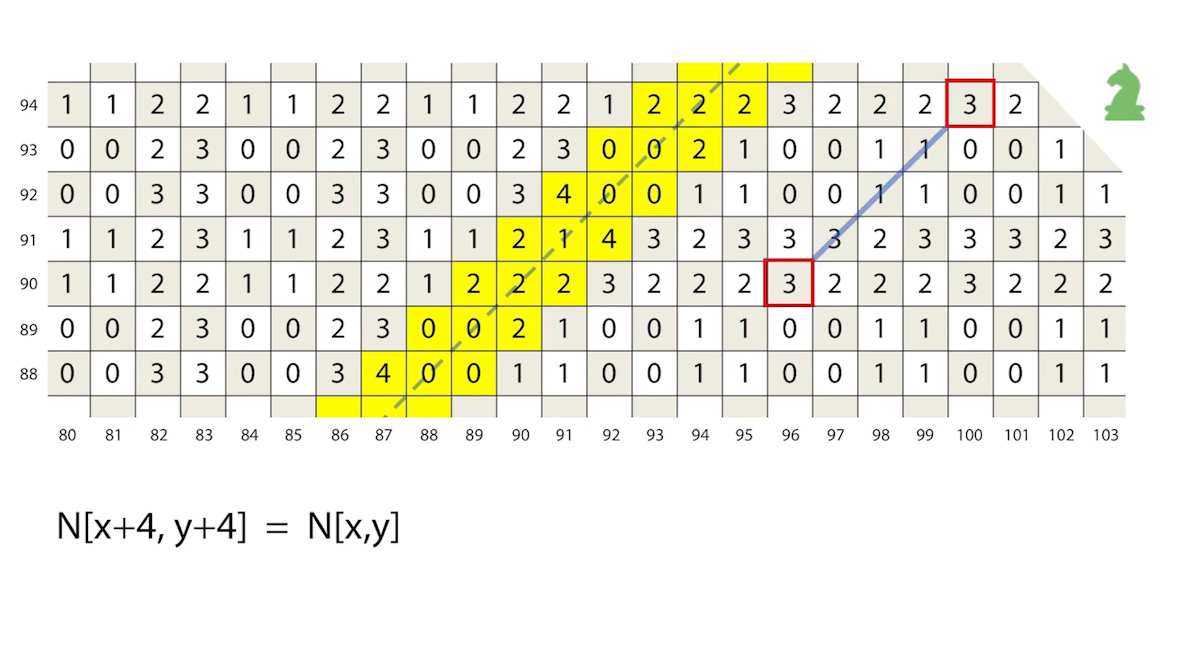Every diagonal has period four. This includes those on or before the thickened main diagonal. After the thickened diagonal, every row also has period four. As shown in this triangle, that implies that below the thickened diagonal, every column also has period four.